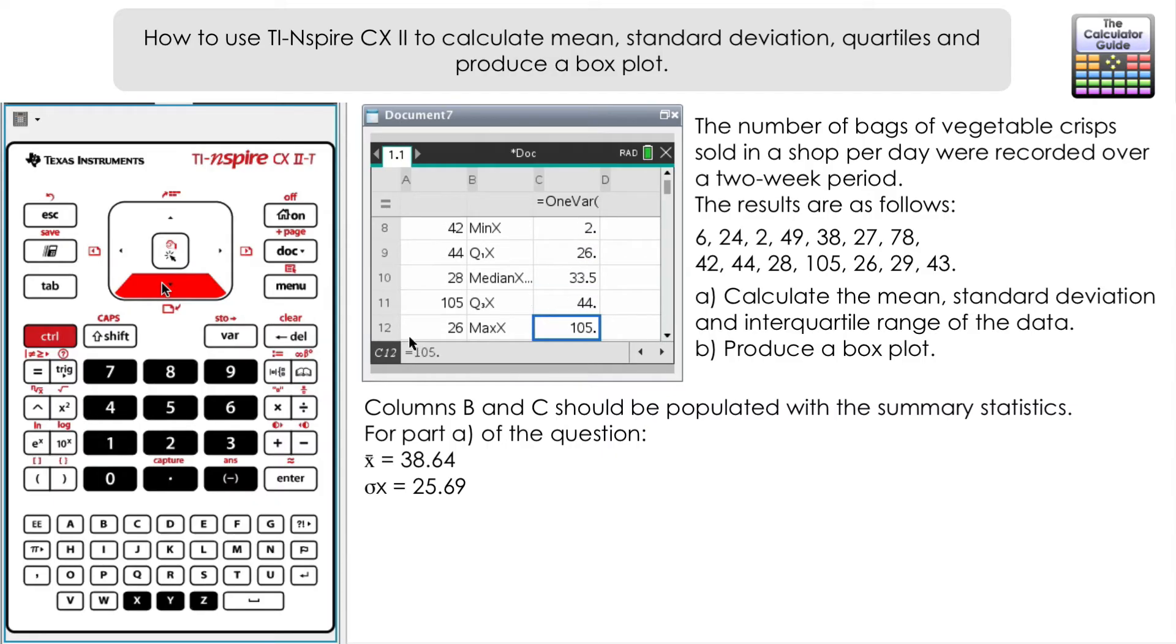It's also asked us for the interquartile range. Let's continue to scroll down and you can see here that we've got three bits of information in the middle here: quarter 1, median which is quarter 2, and quarter 3. So 26, 33.5 is the median, and 44. Interquartile range is the difference between the upper quartile and the lower quartile, so Q3 minus Q1. That's 44 minus 26, we're going to have an interquartile range there of 18.